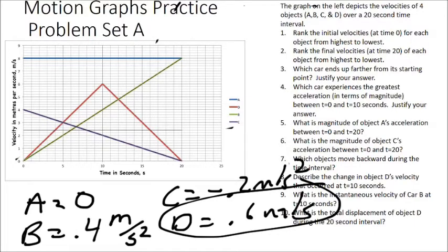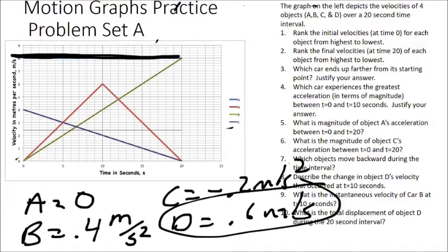While we're looking at accelerations, let's answer questions 5 and 6. Question 5: what is the magnitude of object A's acceleration between t equals 0 and t equals 20? We should notice again that line A is horizontal. The slope of that line is always zero. The average acceleration equals the slope of the velocity-time curve. So the answer to question 5 is zero — object A has no acceleration between t equals 0 and t equals 20.